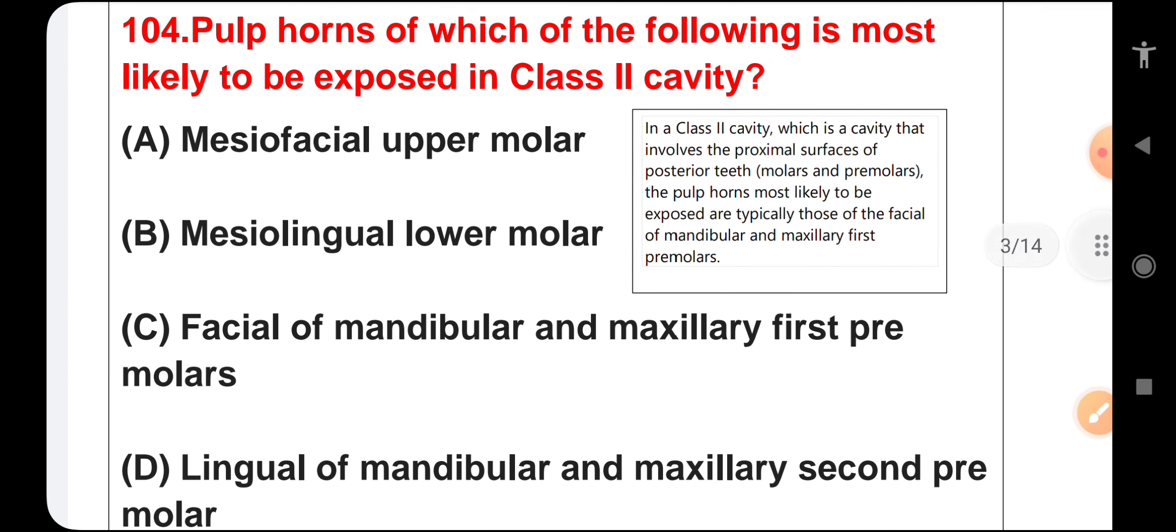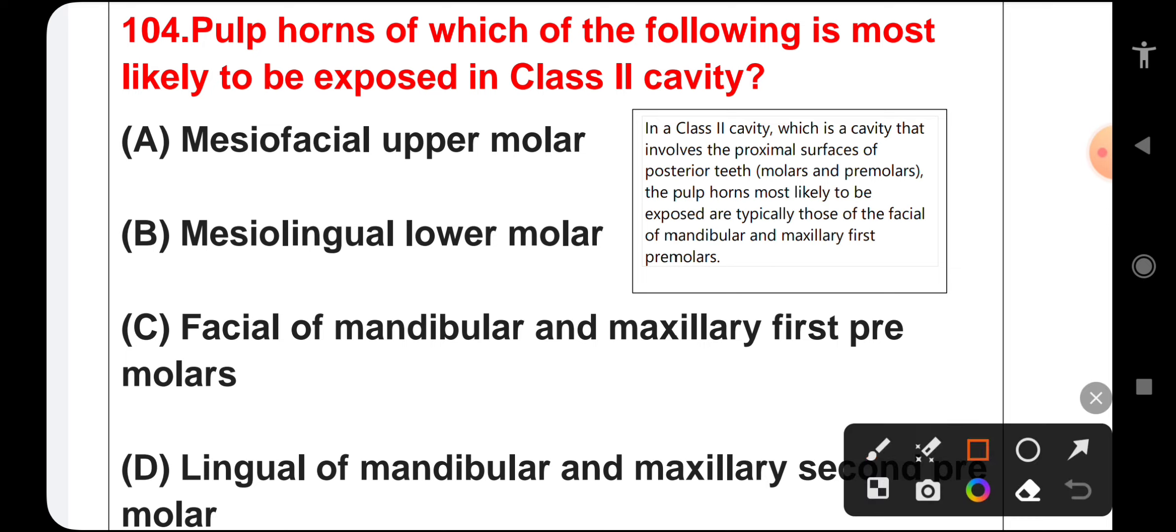Pulp horns of which of the following is most likely to be exposed in Class 2 cavity? Mesiofacial upper molar, mesiolingual lower molar, facial of mandibular and maxillary first premolar, or lingual of mandibular and maxillary second premolar. Class 2 cavity involves the proximal surface of posterior teeth, molars and premolars. The correct answer is facial of mandibular and maxillary first premolar.